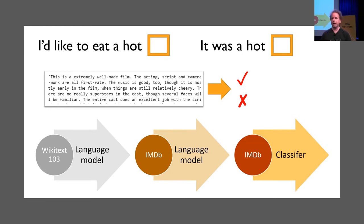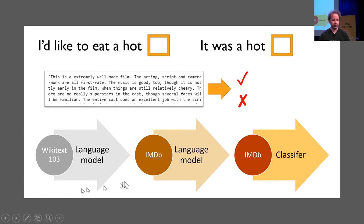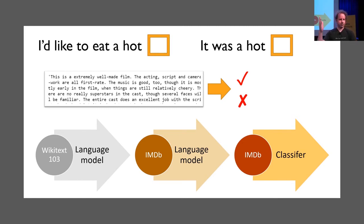If you train a neural net to predict the next word of a sentence, you have a lot of information. Rather than one bit per 2,000-word movie review, in a 2,000-word review there are 1,999 opportunities to predict the next word. Better still, you don't just have to use movie reviews — the hard thing is learning how to speak English. So we can learn from a much bigger set of documents. We used Wikipedia, and Stephen Merity built the WikiText-103 dataset — a subset of the largest Wikipedia articles — which is about a billion tokens to train on.